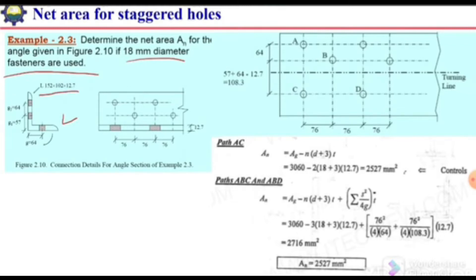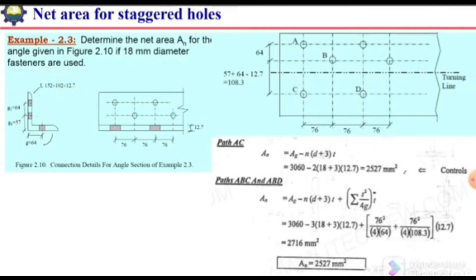The angle section is 152 by 102 by 12.7. The 102 leg has only one bolt at a gauge length of 64, and the 152 millimeter longer leg has two bolts at gauge distances of 57 and 64. Looking at the elevation view, this leg has two lines of bolts — one line here and one line here — and these two lines are staggered.